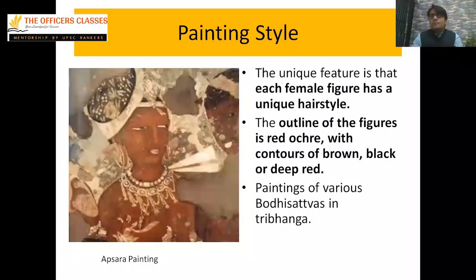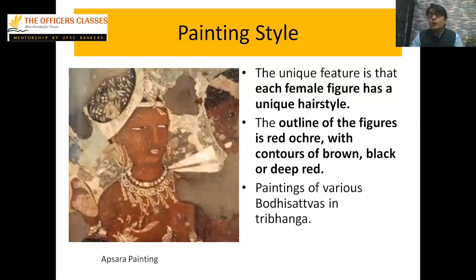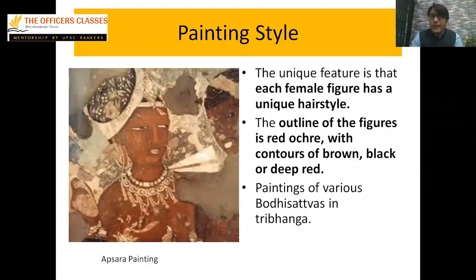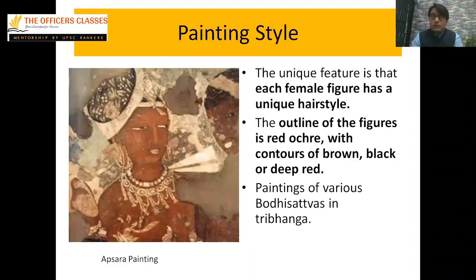Another unique feature is that each female figure has a unique hairstyle, which is a very important characteristic. The outline of figures is red, with contours of brown, black, and deep red. There are also many paintings of Bodhisattvas and female figures in the Tribhanga posture.